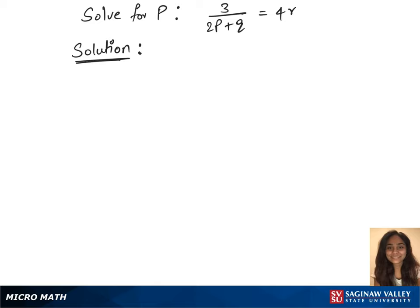To solve this question for p, we will first multiply 2p plus q on both sides, which gives us 3 equals to 4r times 2p plus q.